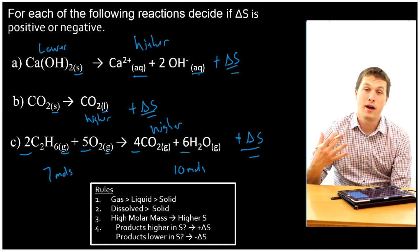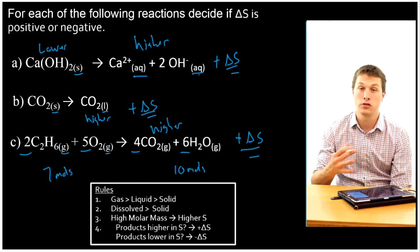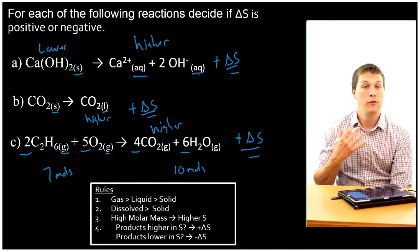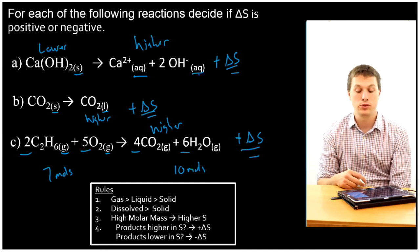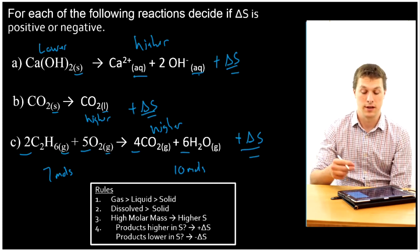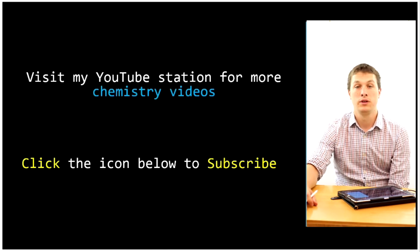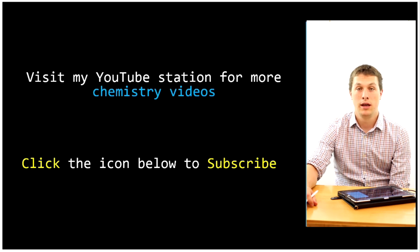So that's how we can predict the change in entropy for a reaction. We can just look at it, and from knowing these three rules, we can predict whether we're going to increase or decrease entropy. Thanks for watching this episode of Real Chemistry. You can subscribe, and I recommend that you do. Check out my channel for lots of other chemistry videos. Thanks for watching.